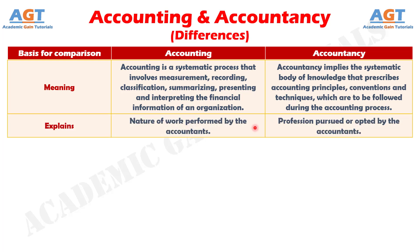Number 2: Accounting is a discipline that is concerned with the nature of work performed by accountants. Whereas, by the term accountancy we mean the profession of the accountants.